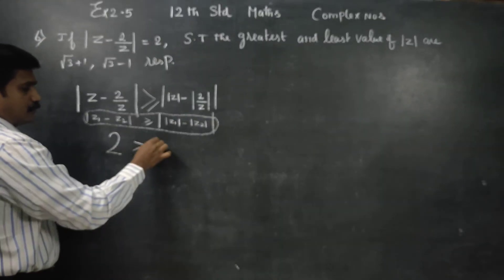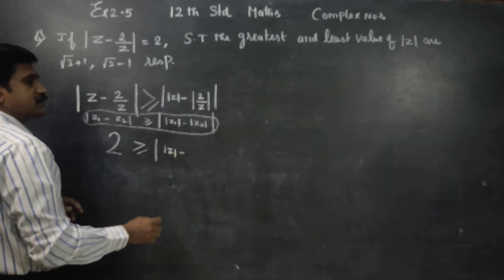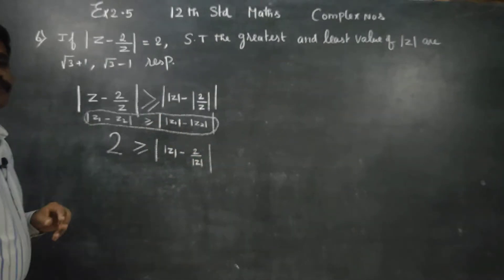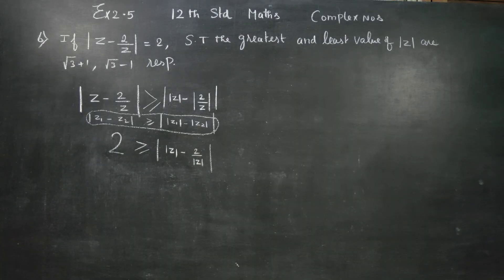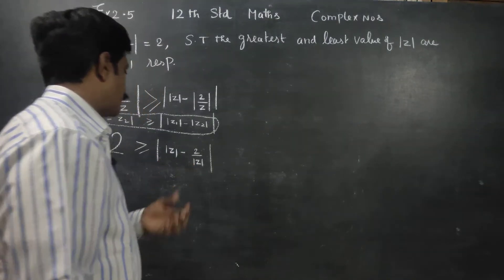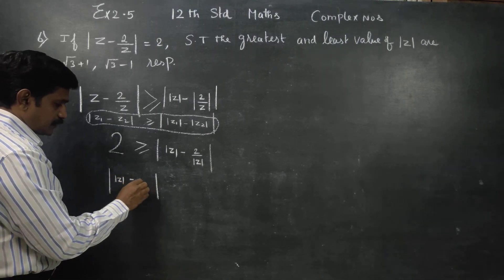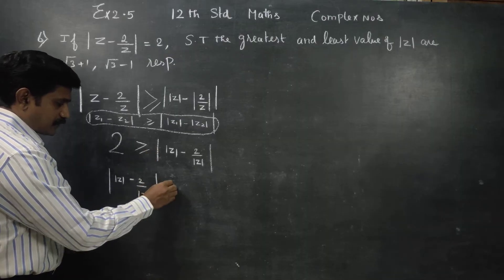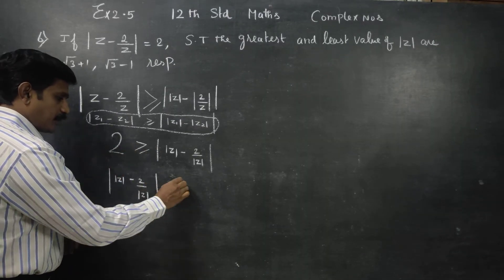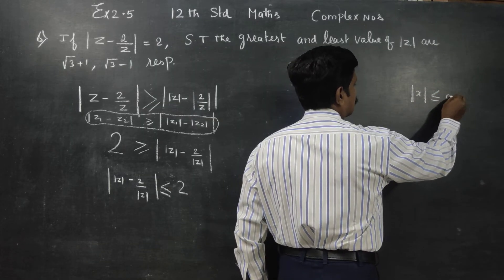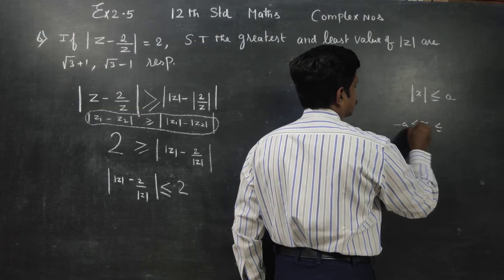So modulus of z minus 2 by modulus of z is greater than or equal to modulus of z minus 2 by z. This can be written as z minus 2 by z. From 11th standard, if the absolute value of x is less than or equal to a, then x lies between minus a and plus a.